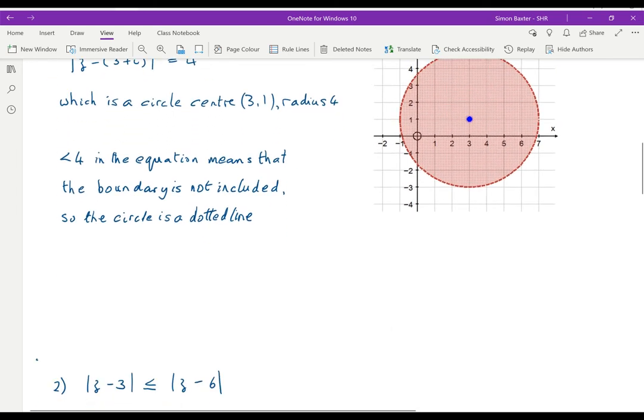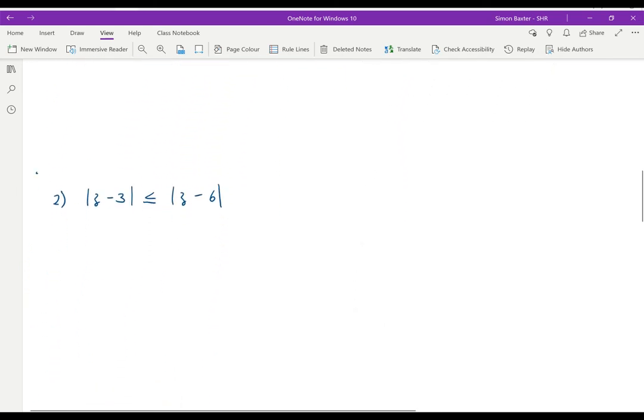Now let's move on. Let's have a look at this one: mod z minus 3 less than or equal to mod z minus 6.